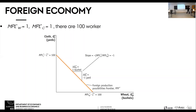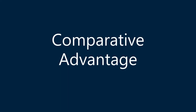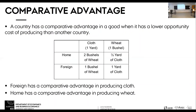Recall that the slope of the production possibility frontier, without the negative sign, is the opportunity cost of wheat. So it tells you that to have one additional unit of wheat, you have to give up one unit of cloth. A country has a comparative advantage in a good if it has the lowest opportunity cost in producing that good.